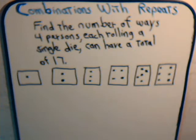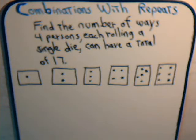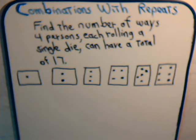This video is example number six that we have prepared concerning combination problems that involve repeats, and we want to solve the problem using generating functions. The problem states: find the number of ways that four persons, each rolling a single die, can have a total of 17.